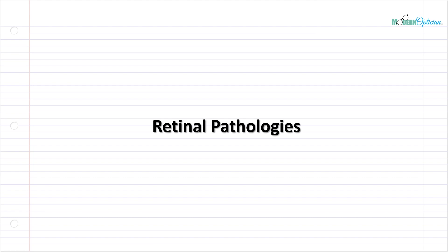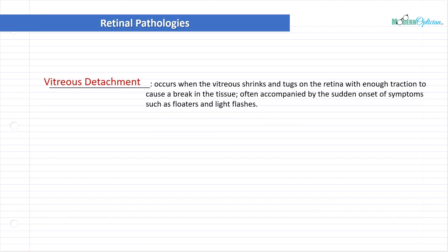I haven't included any images here because I don't want them to distract us from the main goal of understanding what's happening and how it's affecting vision. So let's jump to it. First, let's talk about vitreous detachment. This is going to be the most benign of all, but it happens on a regular basis. Vitreous detachment occurs when the vitreous shrinks and tugs on the retina with enough traction to cause a break in the tissue.